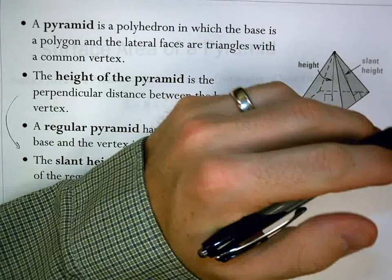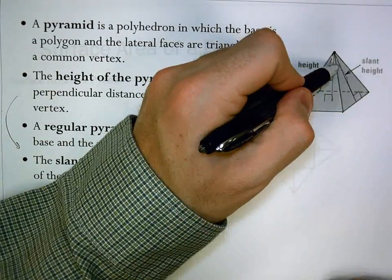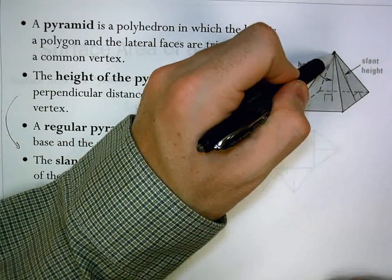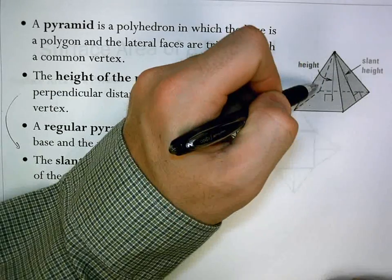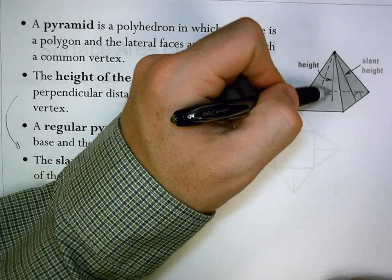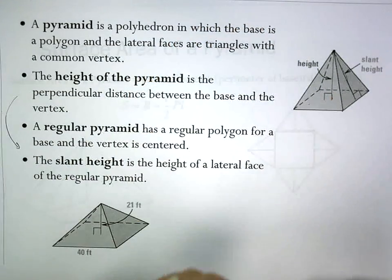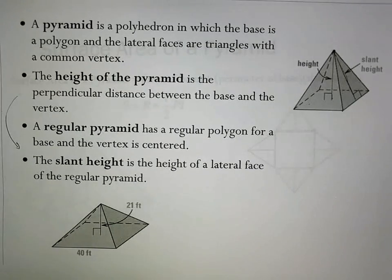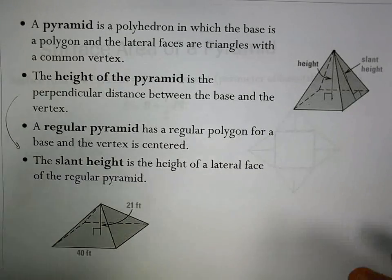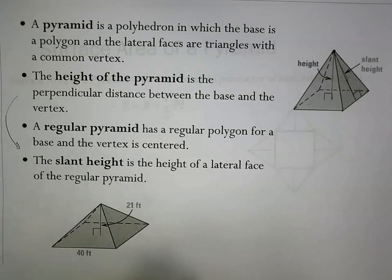Since we're dealing with surface areas, we want the height that's on the outside, on the actual surface. The regular height is on the inside, and when we get to volume that's the one we'll use. Height is on the inside; slant height is on the outside, on the face, so we're going to use slant height for surface area.